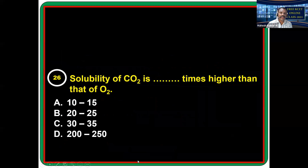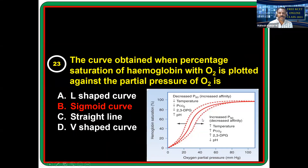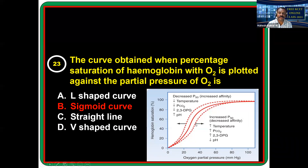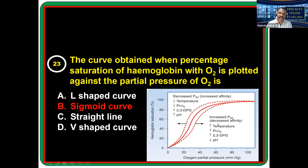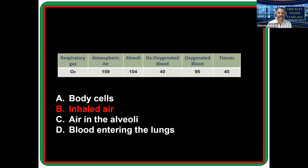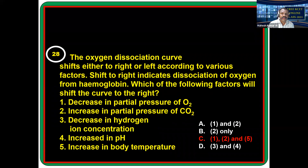Factors that shift the oxygen dissociation curve to the right — meaning dissociation of oxyhemoglobin — include: higher temperature, more partial pressure of CO2, and lower pH value. The answer is: decrease in partial pressure of oxygen, increase in partial pressure of CO2, and increase in body temperature.